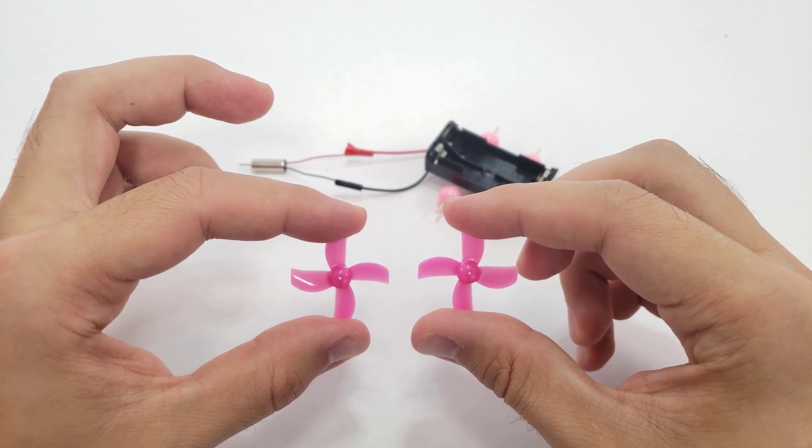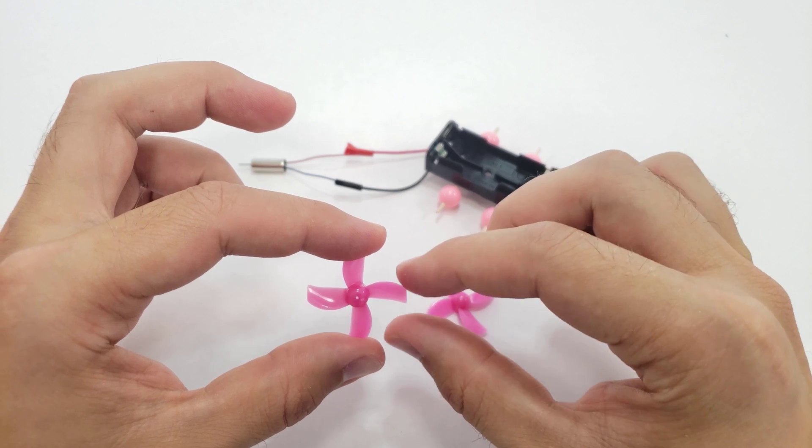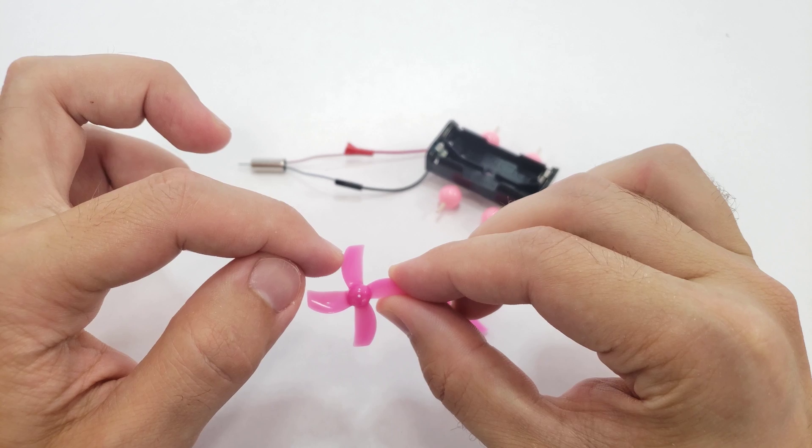To identify one, hold them like this and look for one where the top blade has the curved leading edge pointing to your left.